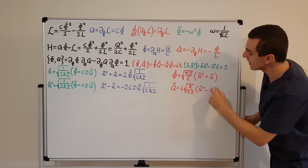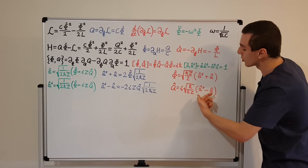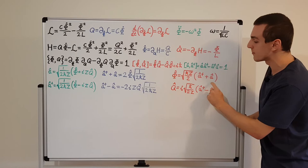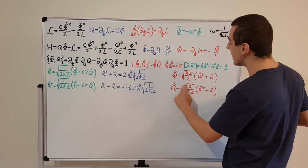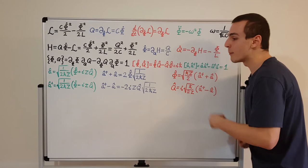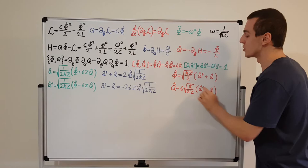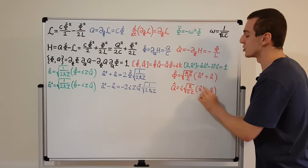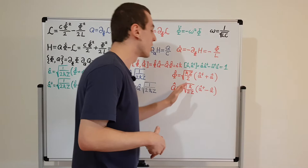For the difference term: taking the Hermitian adjoint swaps the operators, introducing a minus sign. But we have this i, and taking the Hermitian conjugate of i gives minus i. So we have a minus sign from the swap and a minus sign from i, and minus times minus makes plus. So it gives back the same thing — both phi and Q are verified to be Hermitian operators.